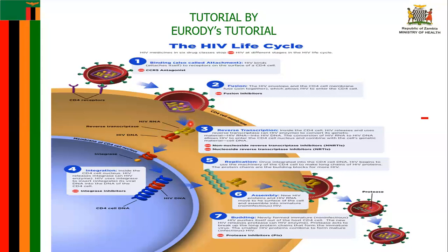Once fusion has taken place, reverse transcriptase has to occur because the RNA of HIV has to be converted to DNA so that it can produce more HIV virus. In the third stage, inside the CD4 cell, the HIV releases and uses reverse transcriptase — an HIV enzyme — to convert its genetic material, HIV RNA, to HIV DNA. This conversion allows the HIV to enter the CD4 cell nucleus and combine with the cell's DNA.